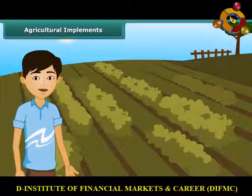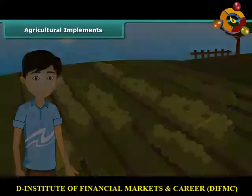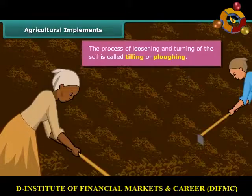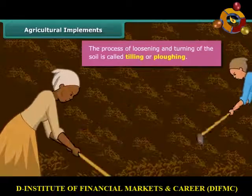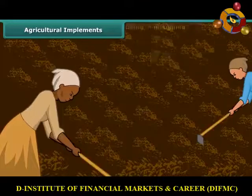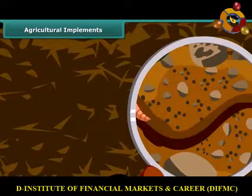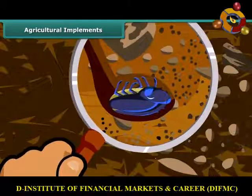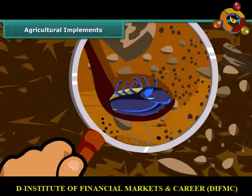Dear friends, do you know how farmers grow crops in a large field? First of all, they prepare the soil for growing the crop. They turn the soil and loosen it. The loosened soil helps in the growth of earthworms and microbes present in the soil. These organisms are also known as the farmer's friends. They add humus to the soil. Turning and loosening of soil brings the nutrient-rich soil to the top, and these nutrients are then used by the plants.